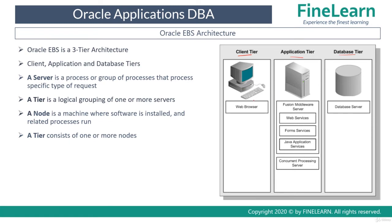If you would have already known how the end-user accesses Oracle eBusiness Suite, as explained in the previous lessons, you know that the user basically uses a simple web browser on his laptop or desktop and types a URL. When he types a URL, the application tier listens to this request, processes the request and sends back the output.